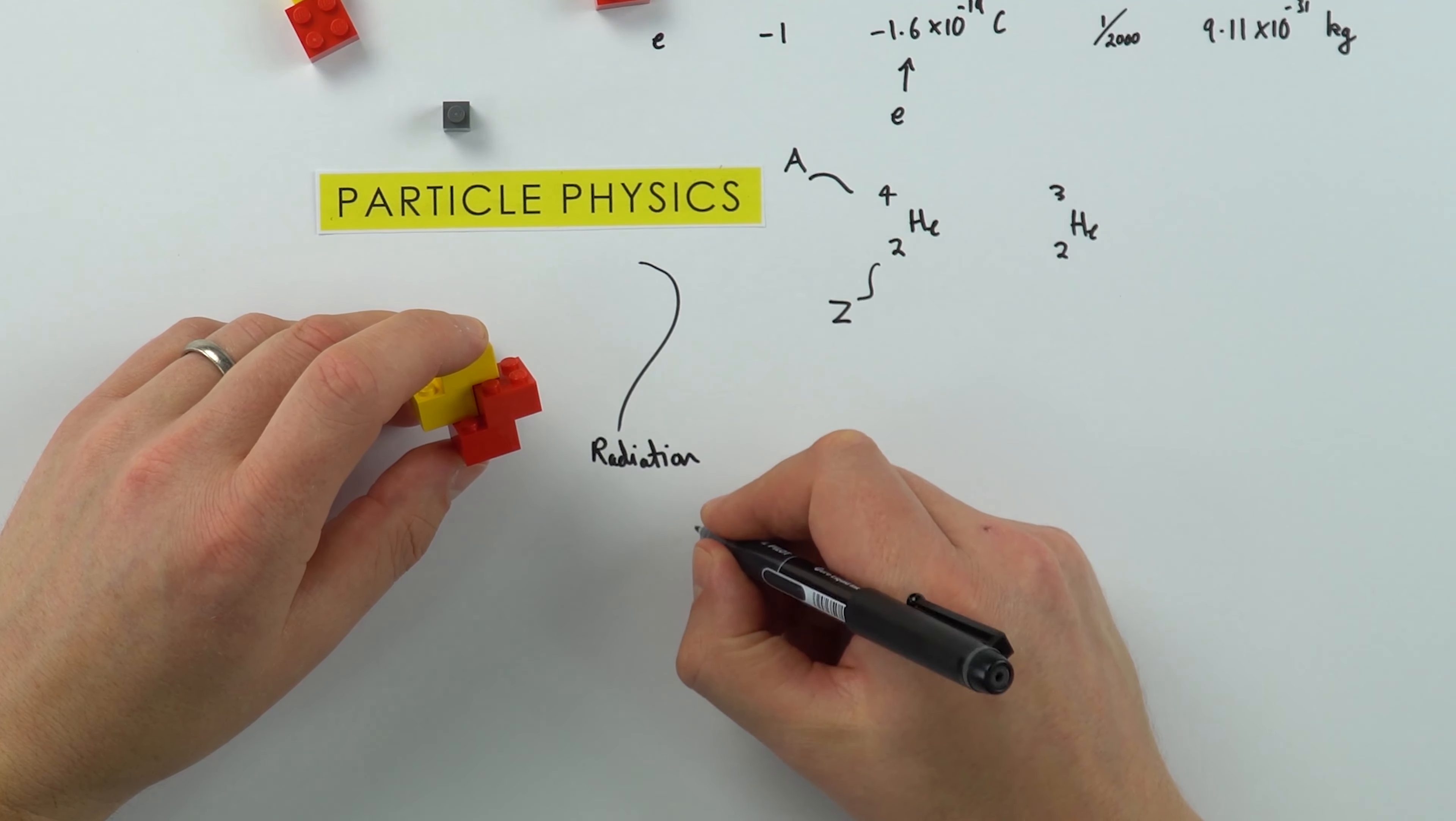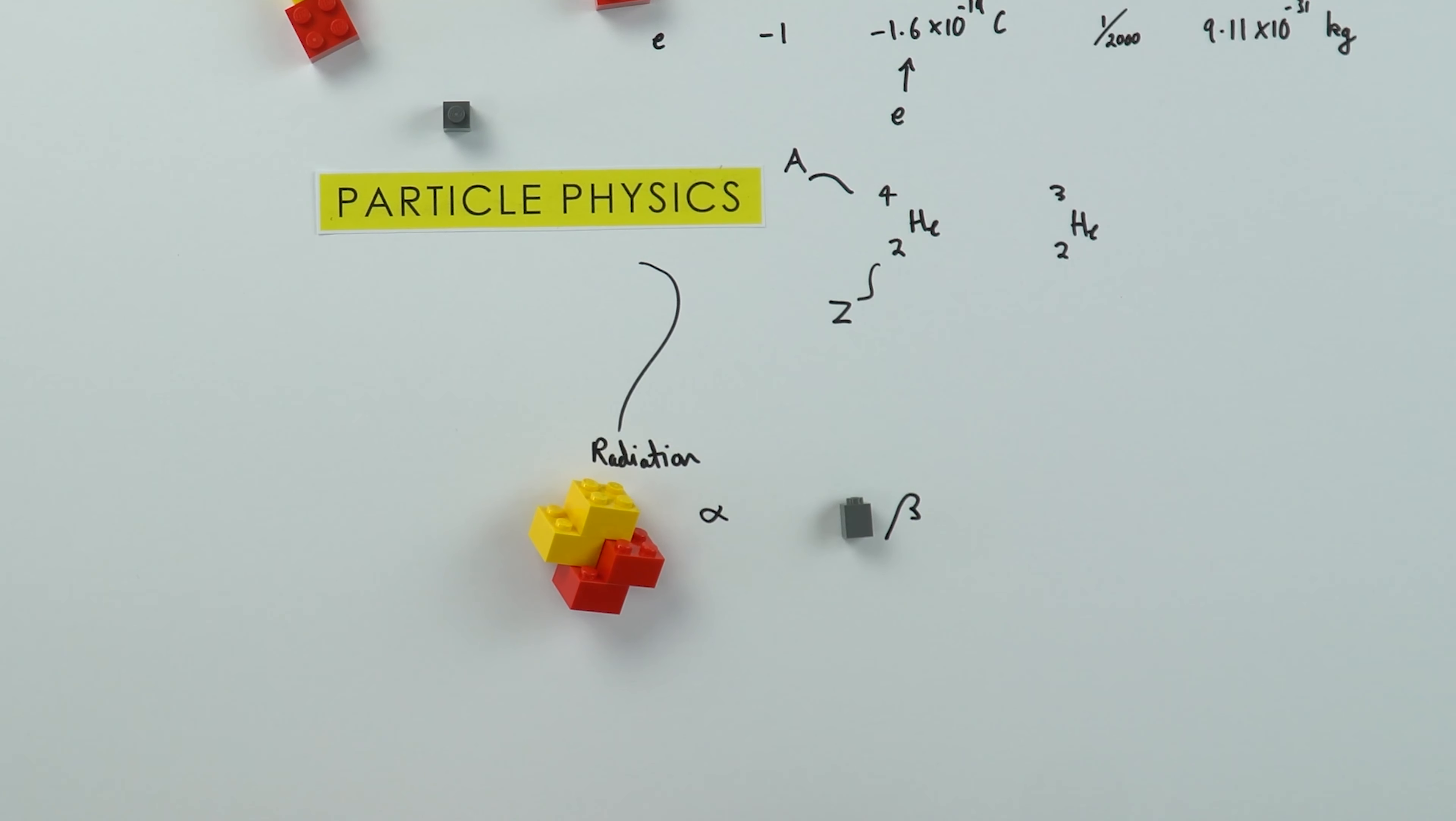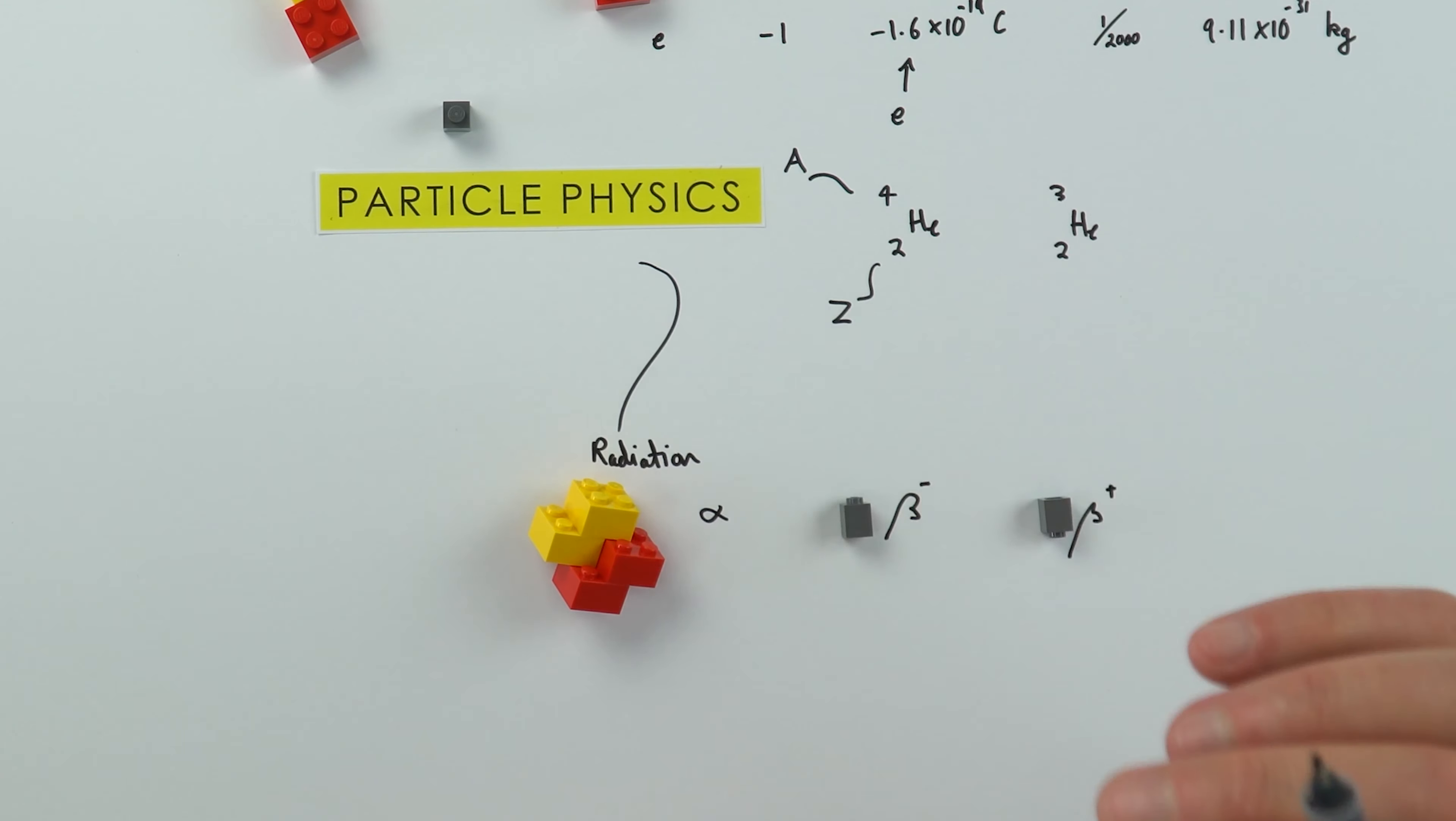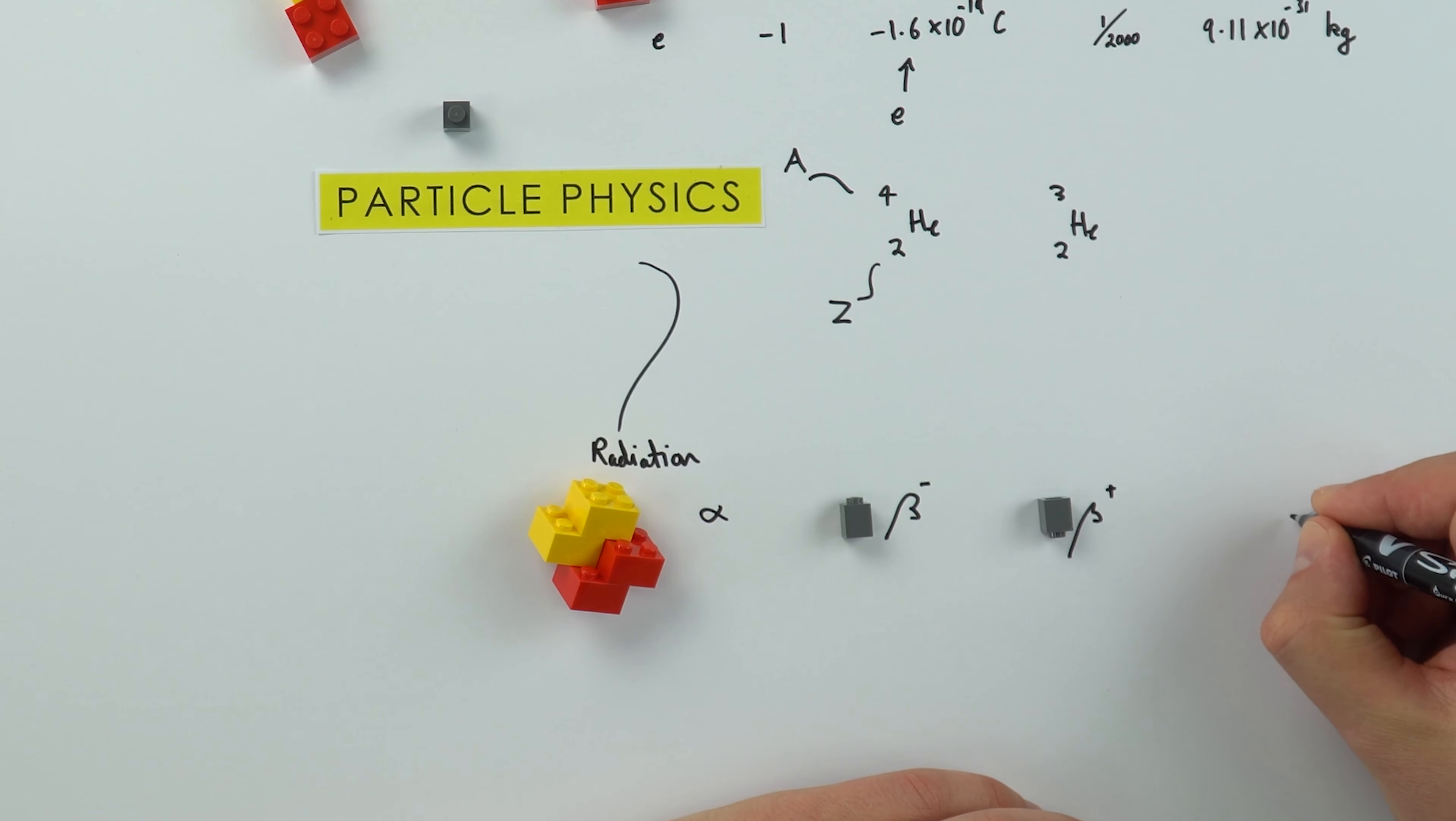At GCSE we maybe talked about alpha radiation, which is two protons and two neutrons. We also talked about beta, which is basically a high speed electron ejected from the nucleus. Well now we go on to different sorts of beta radiation, because this is an electron it has a negative charge so we call that beta minus. We also have beta plus, and I've just turned this electron the other way around to show that this is actually a positron. It's antimatter. Sometimes we have these positive electrons which are emitted from the nucleus as well.